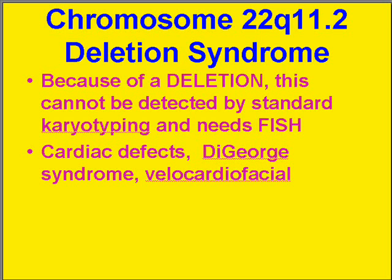In chromosome 22q11.2 deletion syndrome, you have deletion of part of the long arm of chromosome number 22 — segment 11, band 2, or band and subband. You cannot see this by standard karyotyping because it's too small of a region, so FISH is important here.